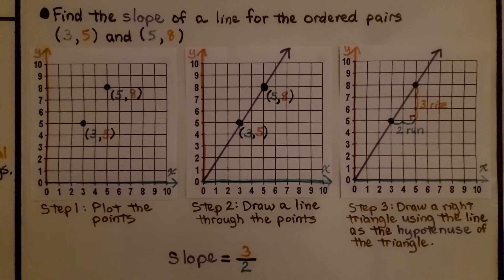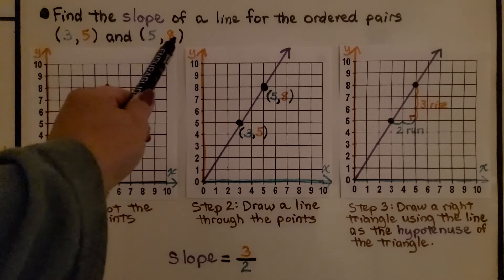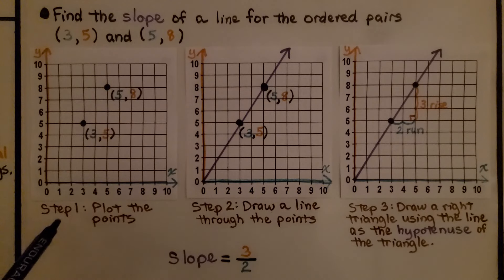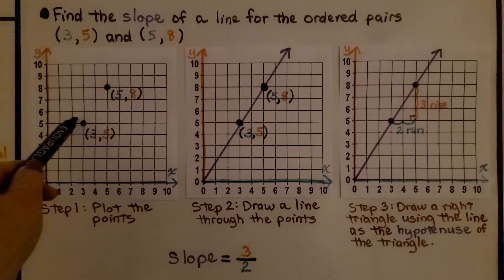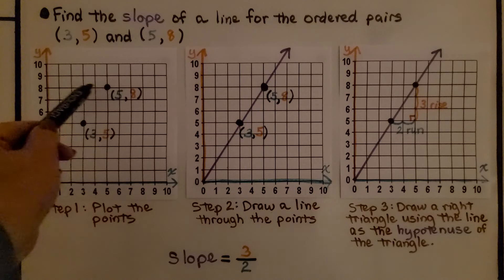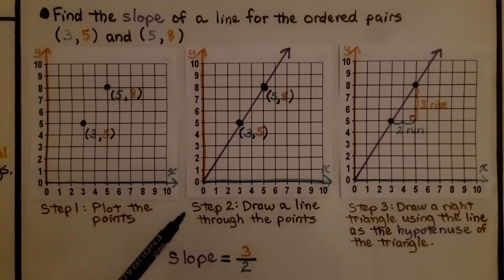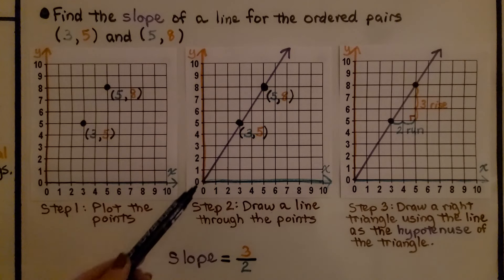Here it's telling us to find the slope of a line for the ordered pairs 3, 5, and 5, 8. Step one, we plot the points. We have 3, 5, and 5, 8. Step two, we draw a line through those points, a straight line.